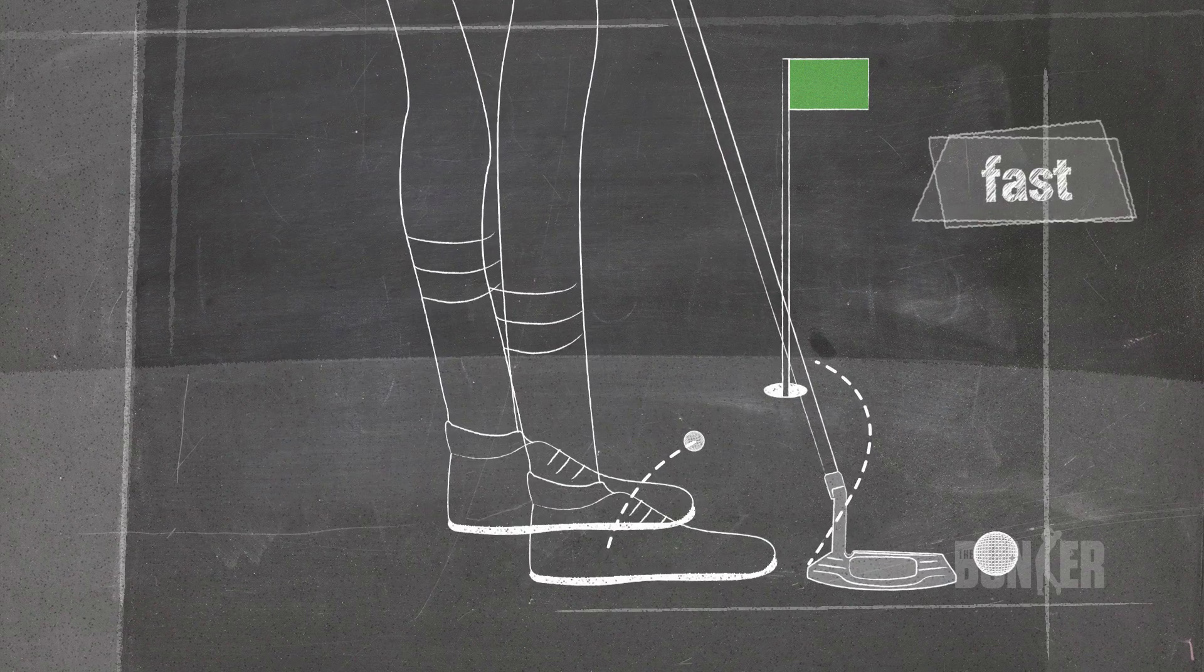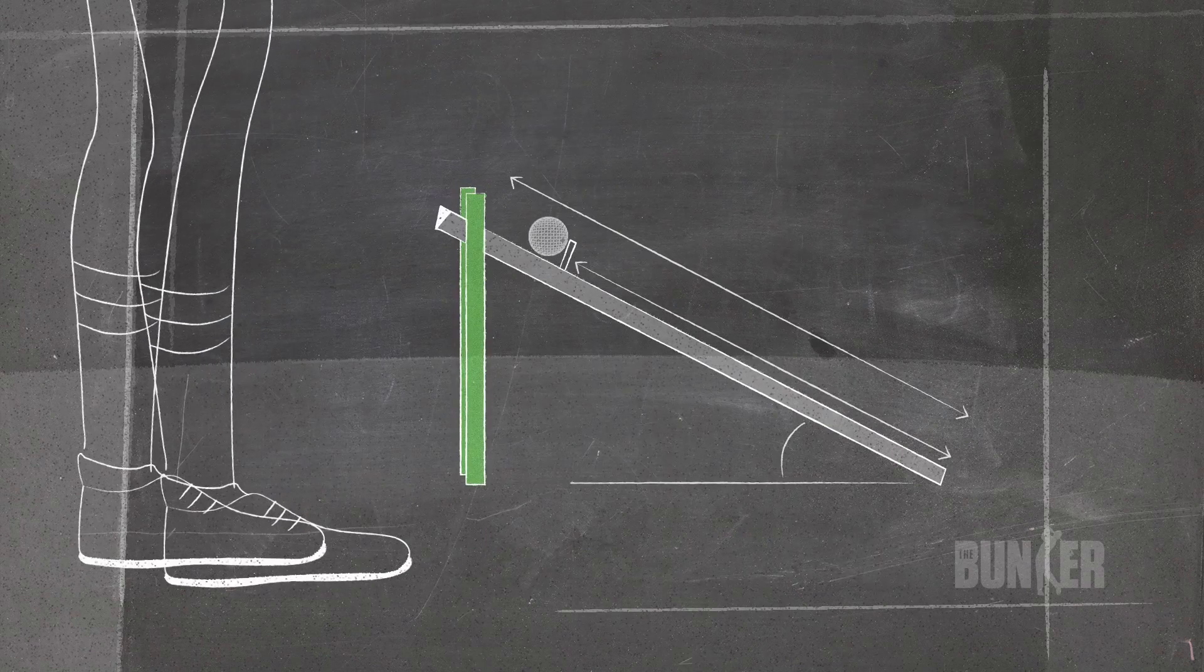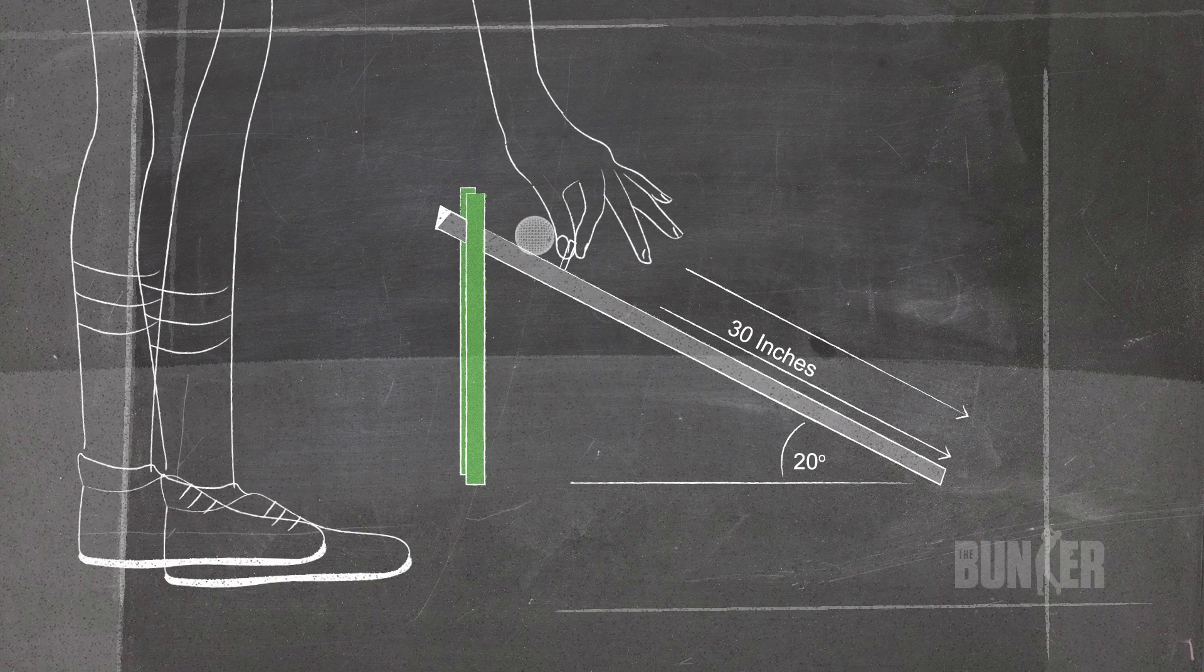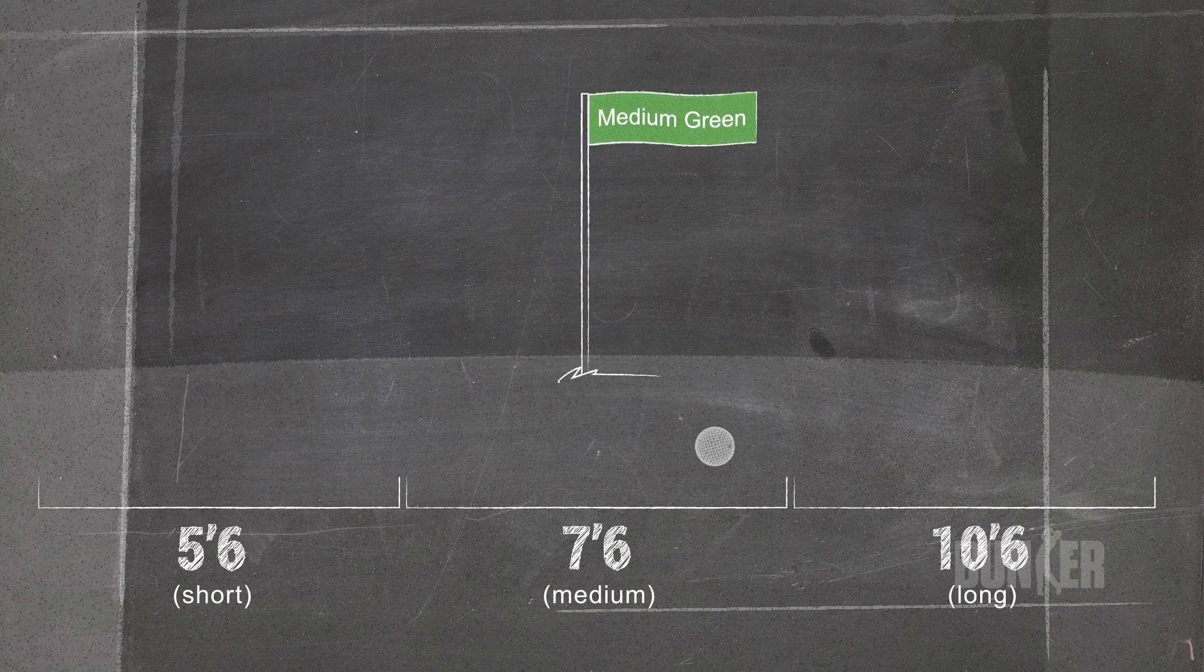This ultimately dictates how hard or soft you'll need to hit the ball. The first person to measure green speed was Eddie Stimpson in 1937. He invented the stimp meter and it's still used today.